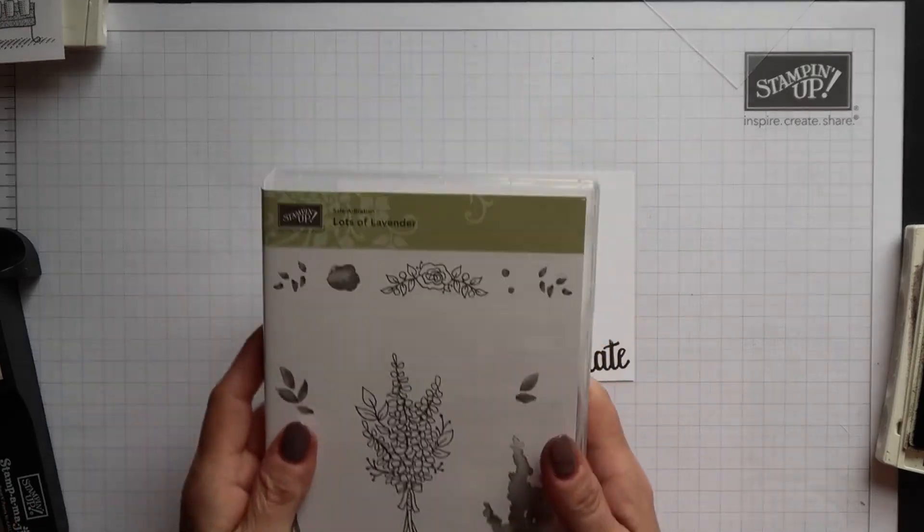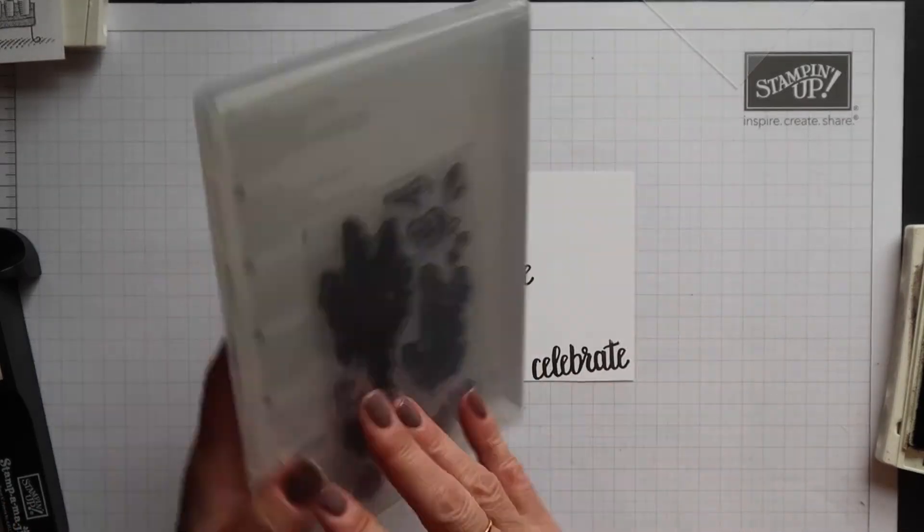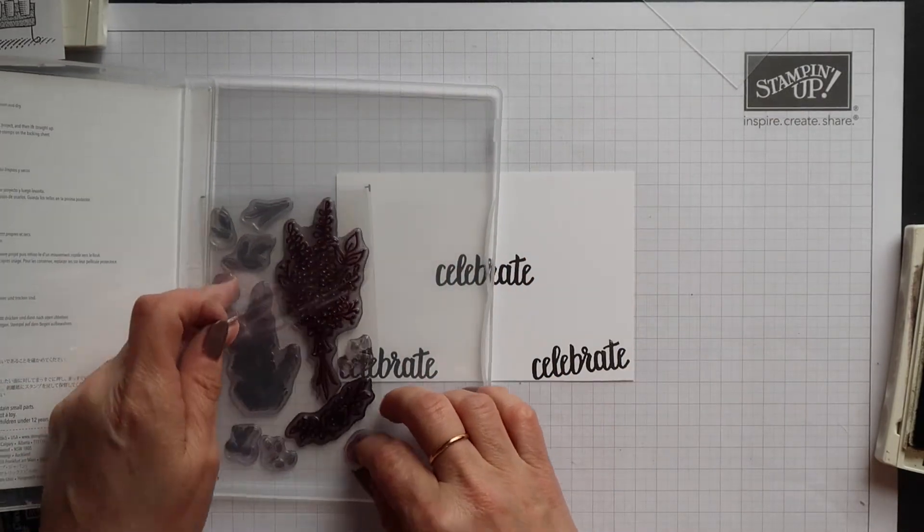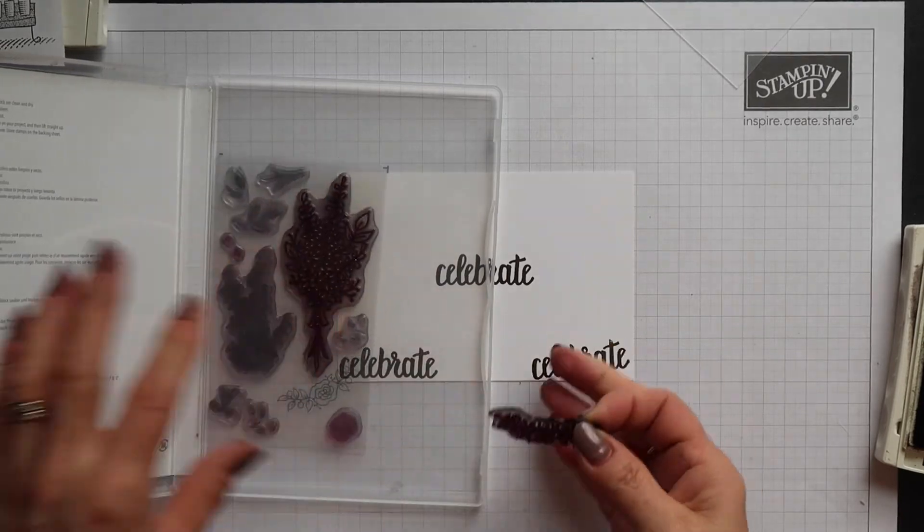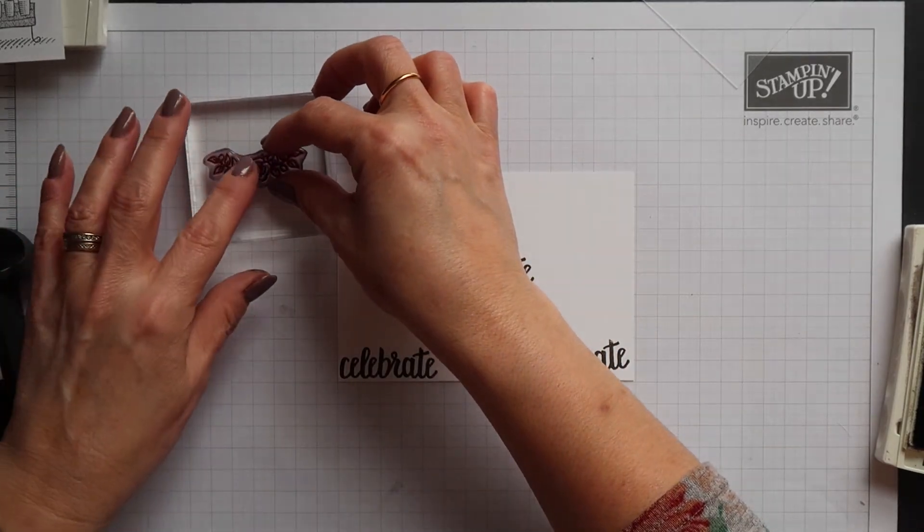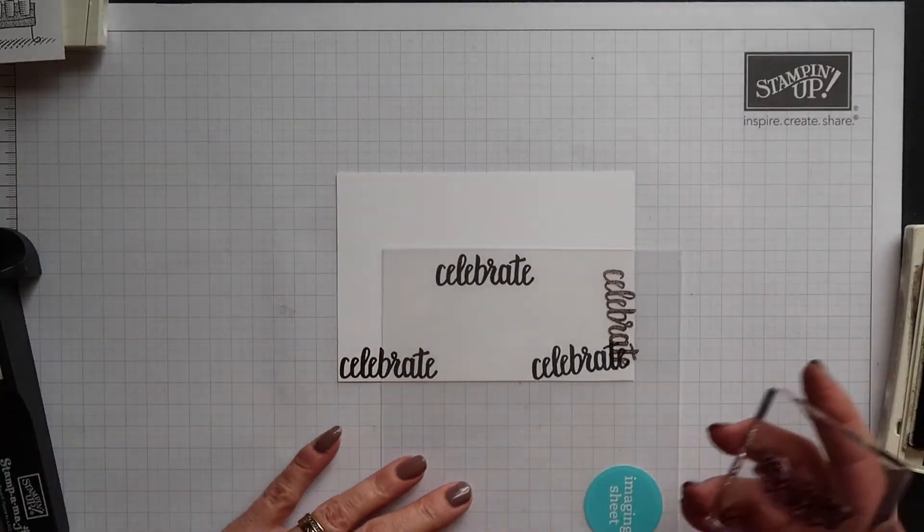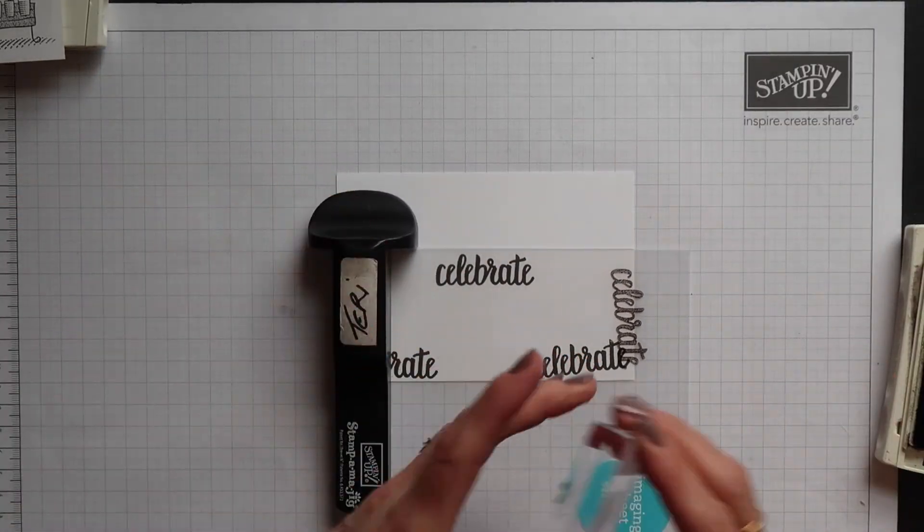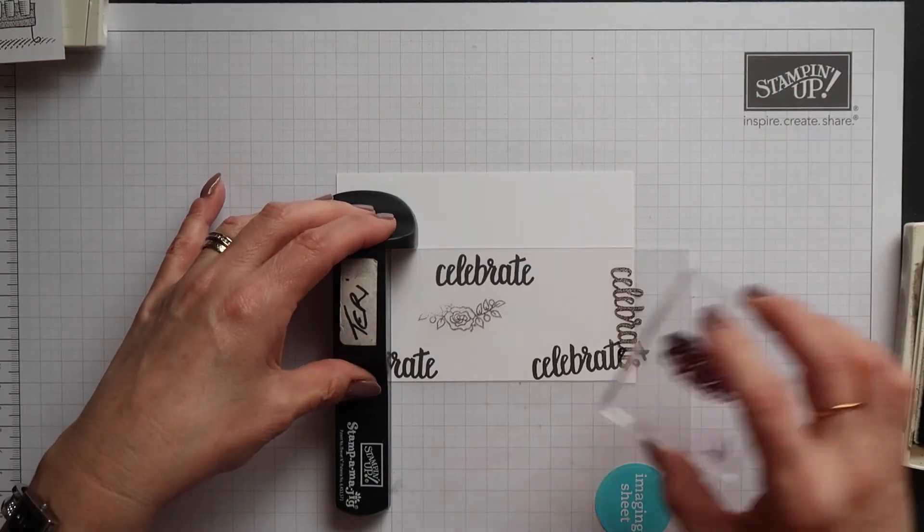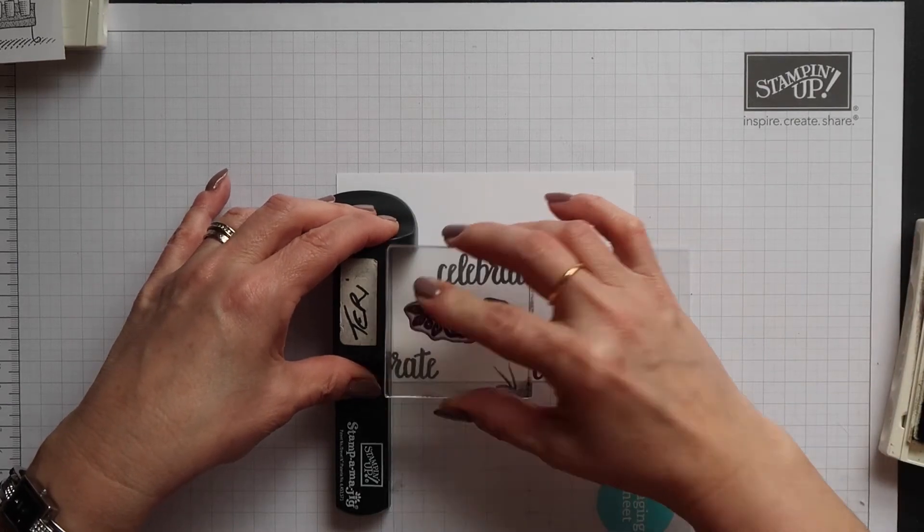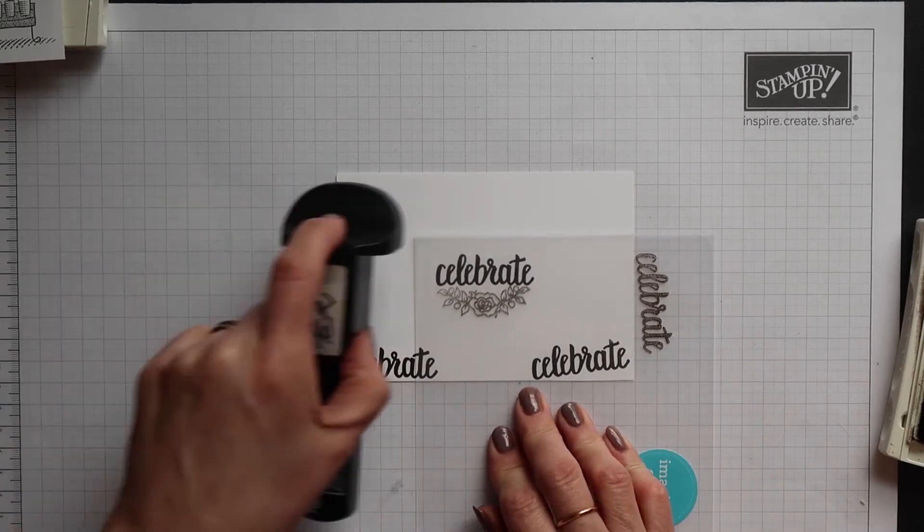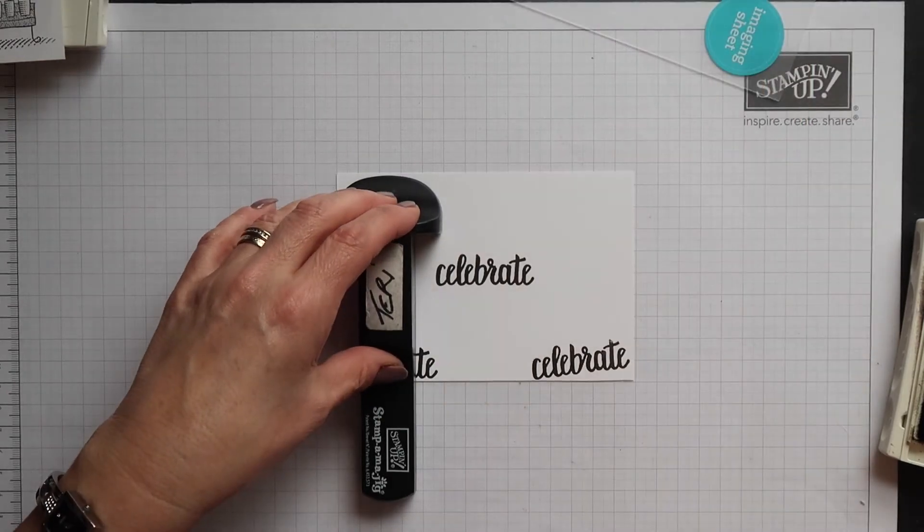You can also use your stamp imaging handle with your photopolymer stamps. Now these are clear stamps so you would use it in exactly the same way as we've done before. Mount your stamp on a clear block, take our reusable sheet, ink up your stamp, position it in that handle and slide it down. Okay and stamp it again, we didn't get a clear impression the first time. Then you can position that imaging sheet wherever you want the stamp to be, stamp it and you again you have perfect placement.